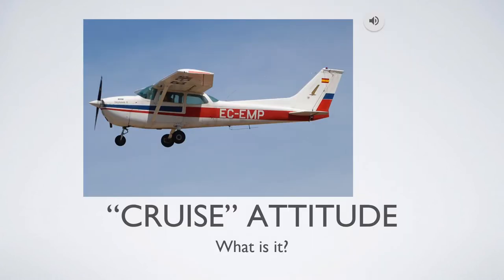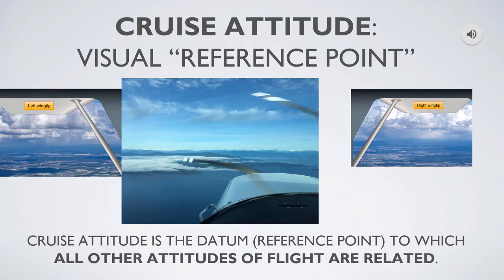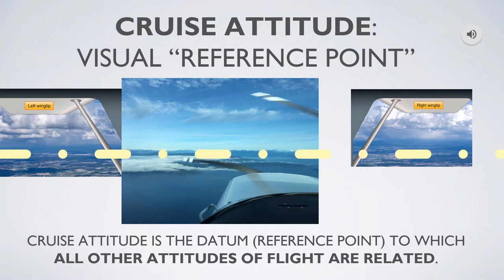Now that we know what an aircraft's movements are, let's talk about attitude. First, let's describe what we call the cruise attitude. The cruise attitude is a visual reference point by which all other attitudes are described. It's basically when the aircraft is flying along in a position where, if you draw an invisible line where the horizon meets the sky, you can see a small amount of land below the horizon and a large amount of sky. Looking from side to side, the wings are also level with that horizon.